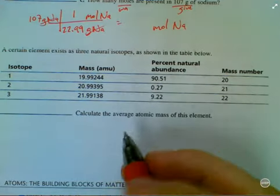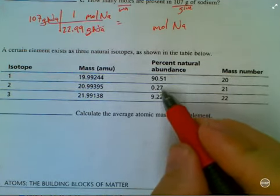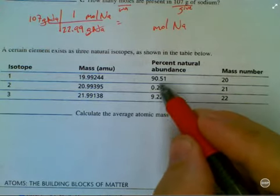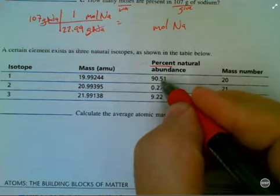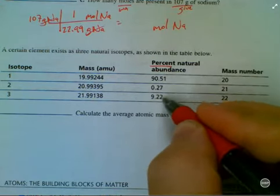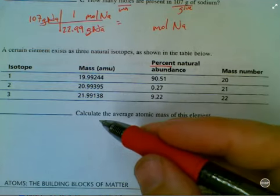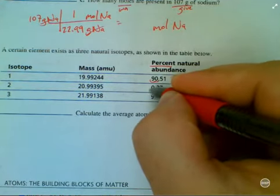So all the naturally occurring isotopes have these masses, and I need to weight this average. So I'm going to take into consideration this information. But these numbers are in percentages: 90.51%, 0.27%, 9.22%. Before I use these in calculations, I need to move these into decimal format.